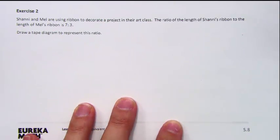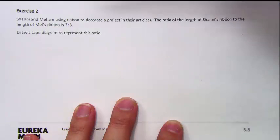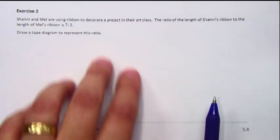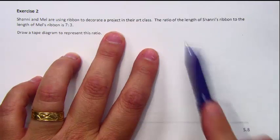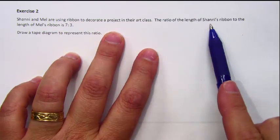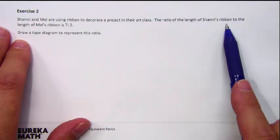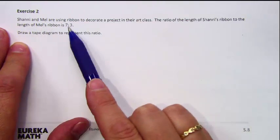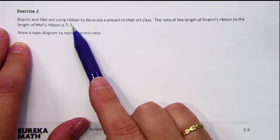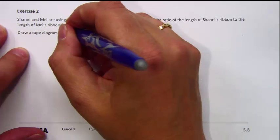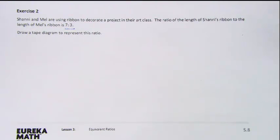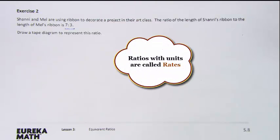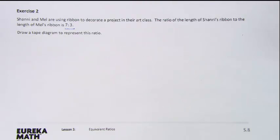Let's take a look at a problem where we can use a tape diagram to find the answer. Shawnee and Mel are using ribbon to decorate a project in their art class. The ratio of the length of Shawnee's ribbon to the length of Mel's ribbon is 7 to 3. Notice this problem doesn't say anything about units — we don't know if we're measuring in inches, centimeters, yards, feet, or even miles. The ratio is just 7 to 3.